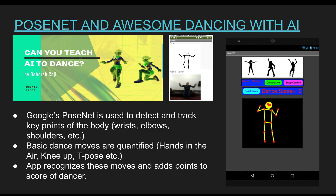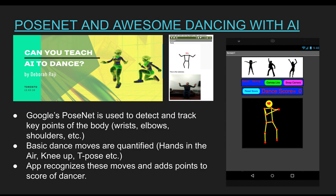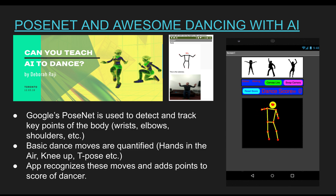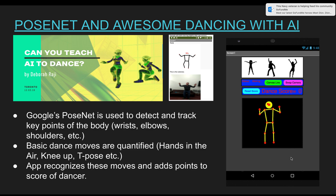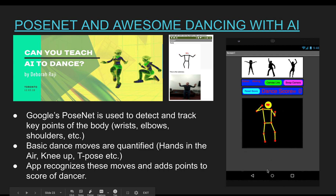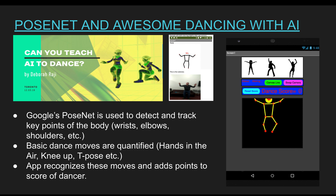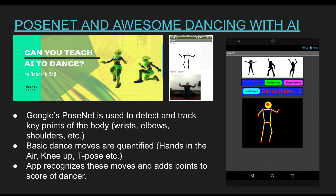The last current project is PoseNet and the Awesome Dancing with AI. We use Google's PoseNet technology to detect and track key points of the body — wrists, elbows, shoulders, etc. — and build a skeletal representation of the body. Some basic dance moves are quantified, such as hands in the air, knee up, and T-pose. The app recognizes these moves and adds points to the dancer's score. It's a fun, interactive, and enjoyable project for kids to create.